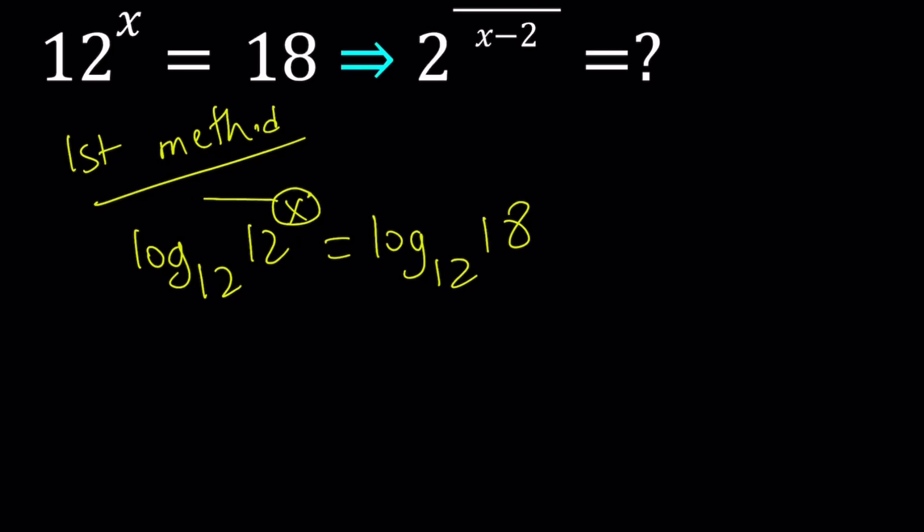So I'm going to go ahead and move this x to the front. And that's going to be like x times log with base 12 of 12. So that's going to be 1 when these two numbers are the same. It's always 1. So this is going to give me x. That's the cool part about it.